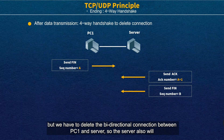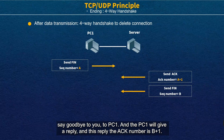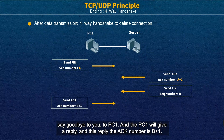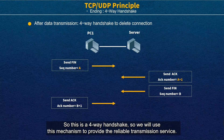But we have to delete bi-directional communication between PC1 and server. So the server also sends out FIN packets with sequence number B, indicating it also wants to say goodbye to PC1. PC1 gives a reply with ACK number B+1. So this is the 4-way handshake — the mechanism to provide reliable service before transmission, during transmission, and after transmission.